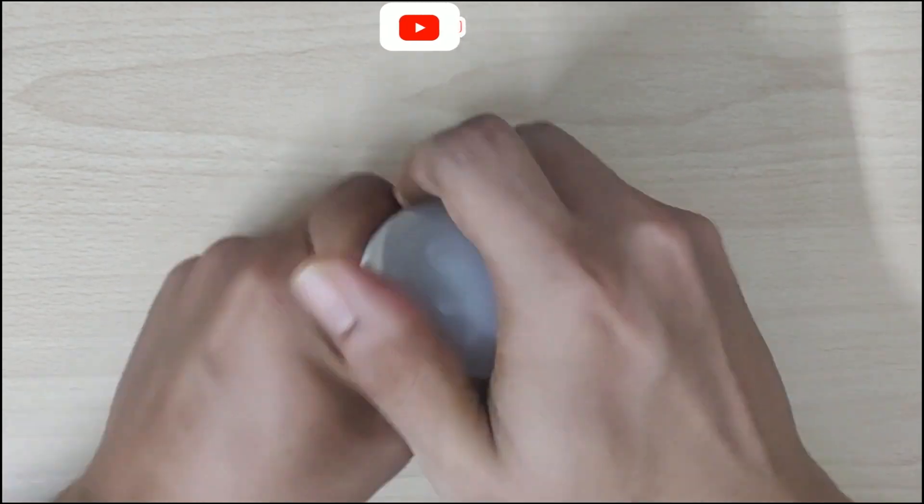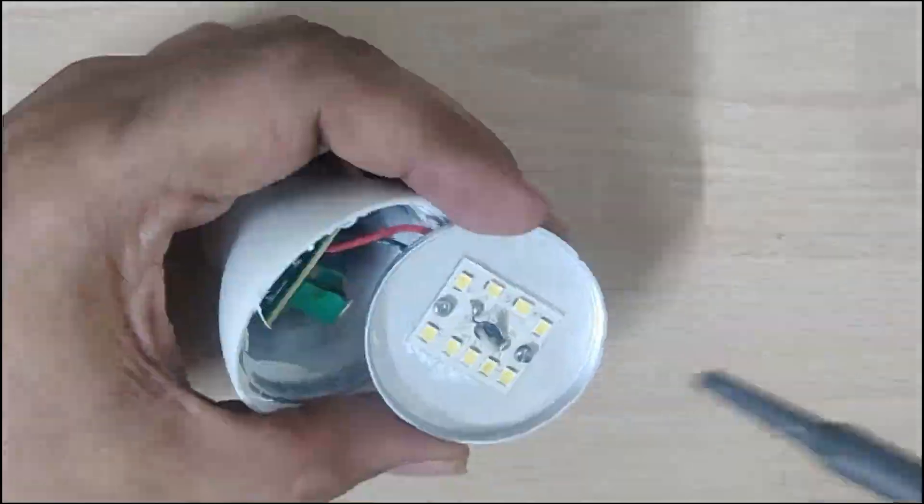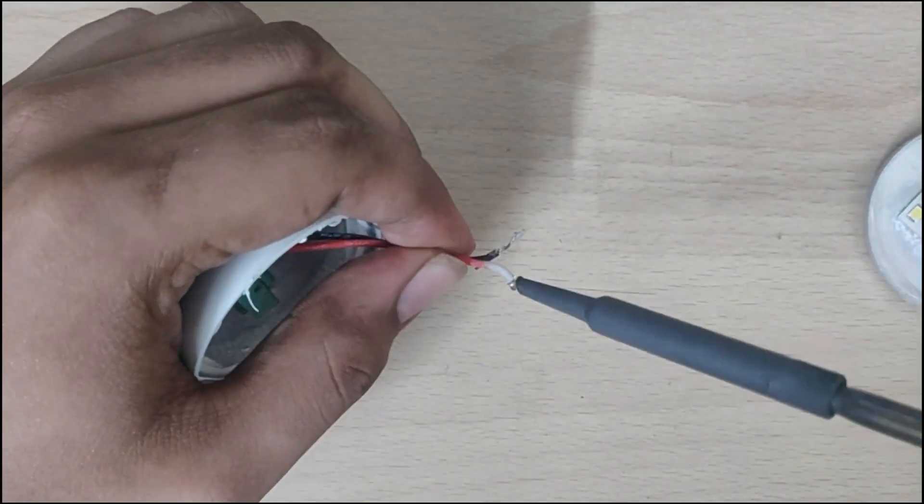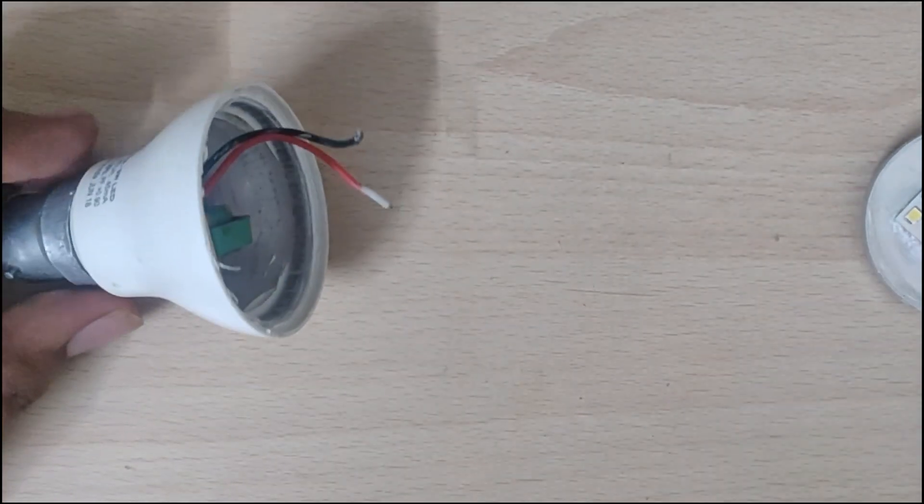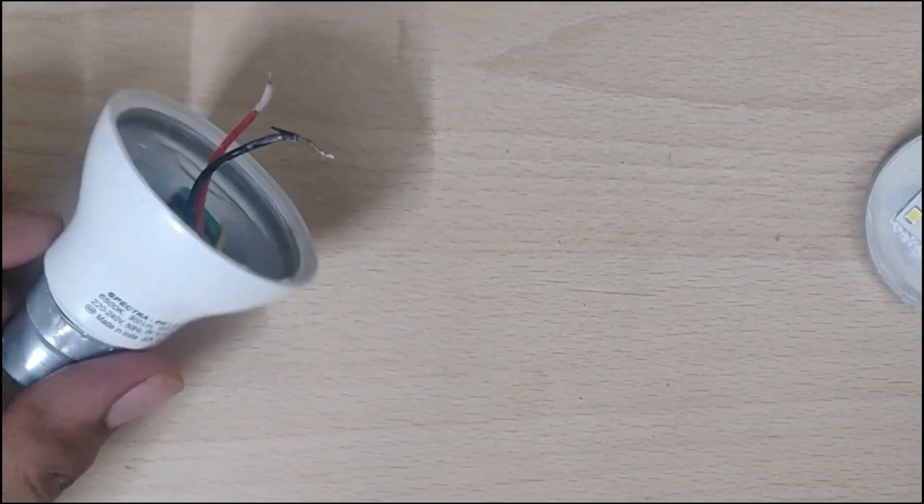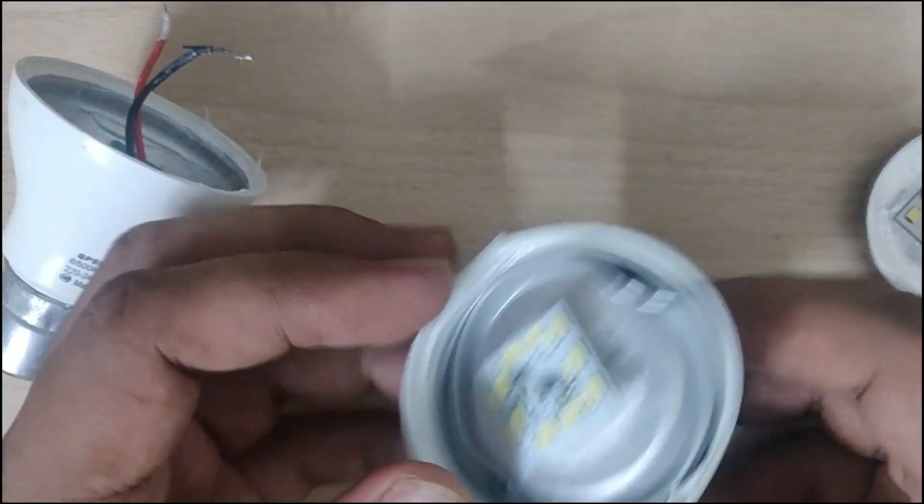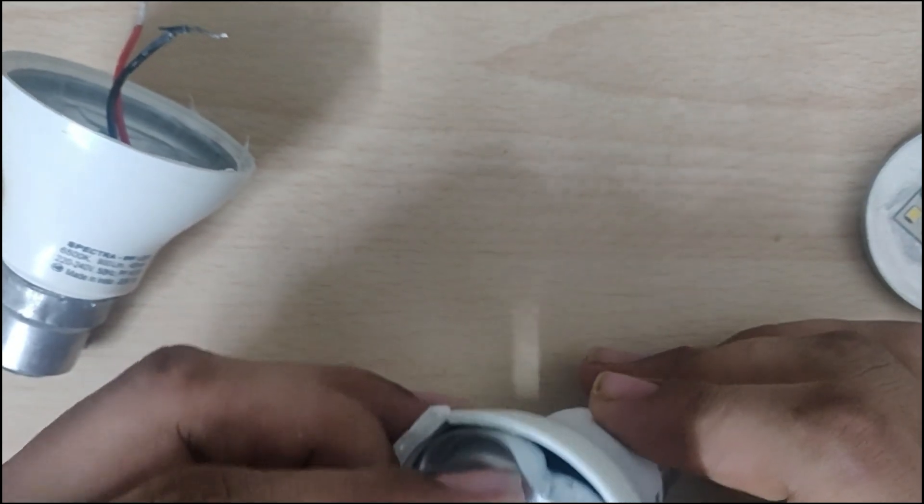So first let's open this. So I will get the LED from another spoiled LED bulb. As you can see, voltage board has burnt out, so I will replace this LED.